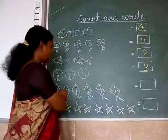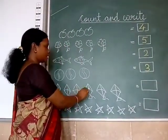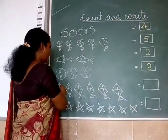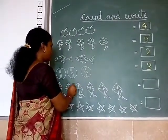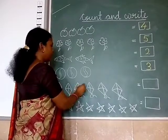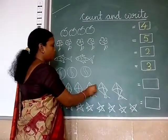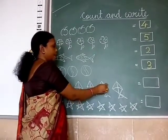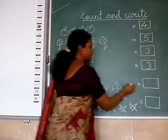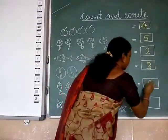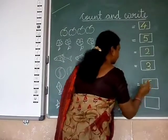Next is kite. How many kites? 1, 2, 3, 4, 5, 6. Write here 6.